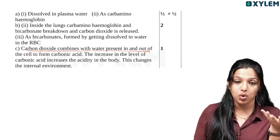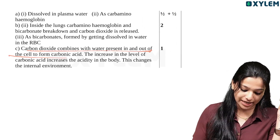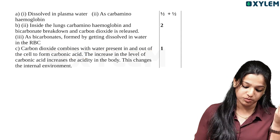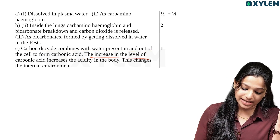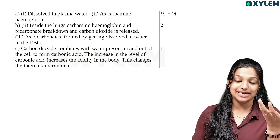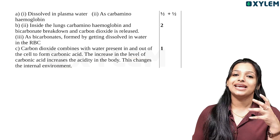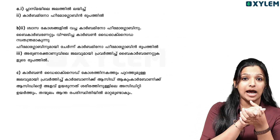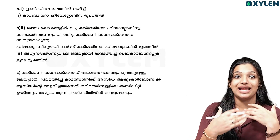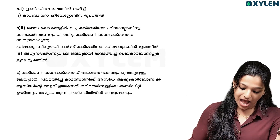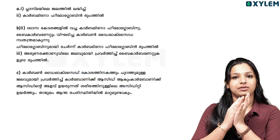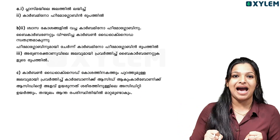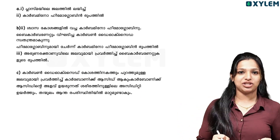Carbon dioxide compounds with water present in and out of the cell to form carbonic acid. This increase in the level of carbonic acid increases acidity in the body and changes the internal environment. If carbonic acid forms, it will acidify your body and disrupt the balance of the internal homeostasis.